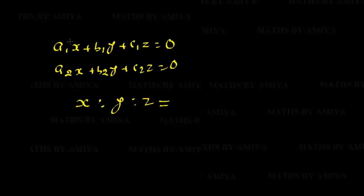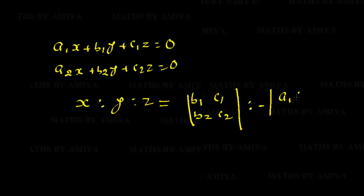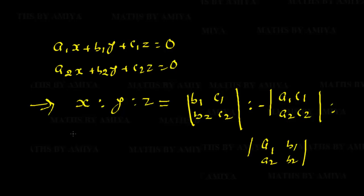The ratio is found as follows: for x, forget about x — you use B1, C1, B2, C2 (the determinant of the remaining coefficients). For y, forget about y — you use A1, C1, A2, C2. For z, forget about z — you use A1, B1, A2, B2. And this gives the ratio of x to y to z. But the middle term — the one for y — should have a negative sign. This is the ratio of the variables.